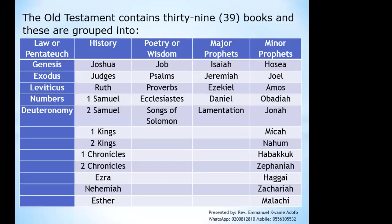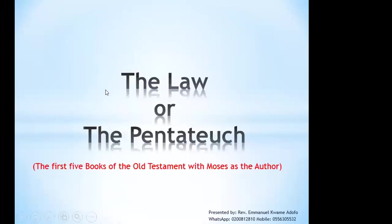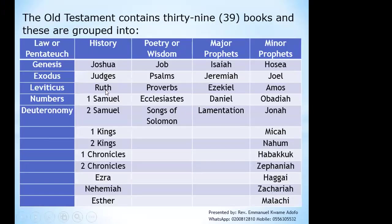There are 39 books in the Old Testament, which can be grouped into the law. Under the law, we have Genesis, Exodus, Leviticus, Numbers, Deuteronomy. When you put together the history books, you have Joshua, Judges, Ruth, 1st and 2nd Kings, 1st and 2nd Chronicles. We have Ezra, Nehemiah, and Esther.